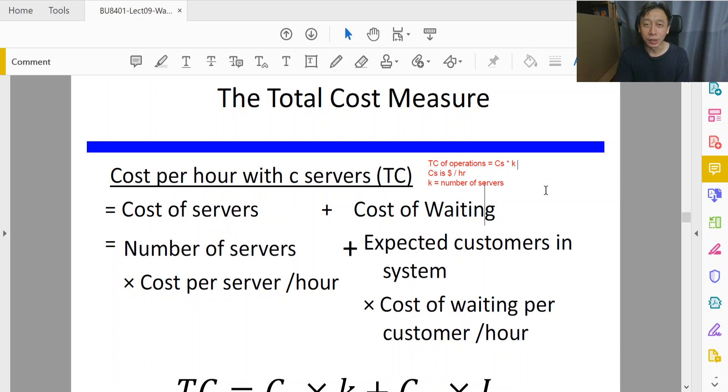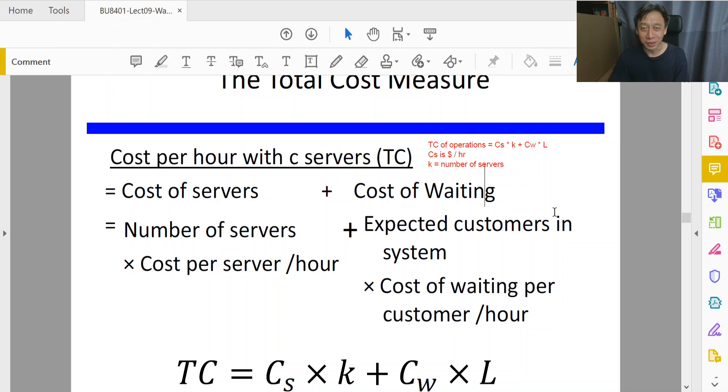Trying not to make it very complicated, we just attach a constant Cw times the number of customers we end up causing being trapped in our queue system, L. Now two things to take note of: first, we have introduced Cw, that is cost of waiting, which I just want to annotate with the unit.